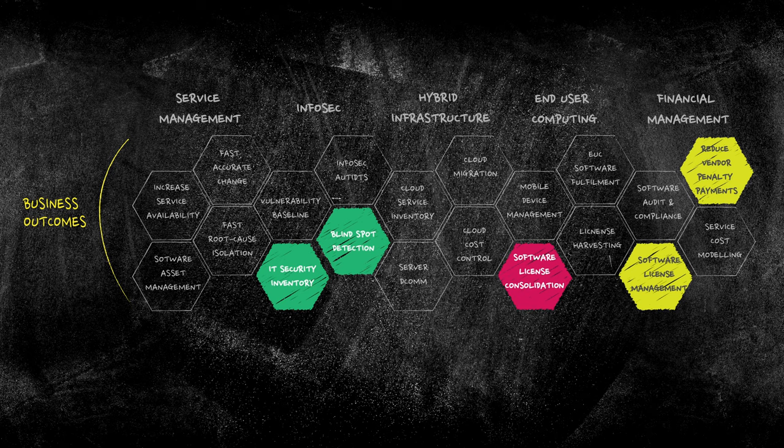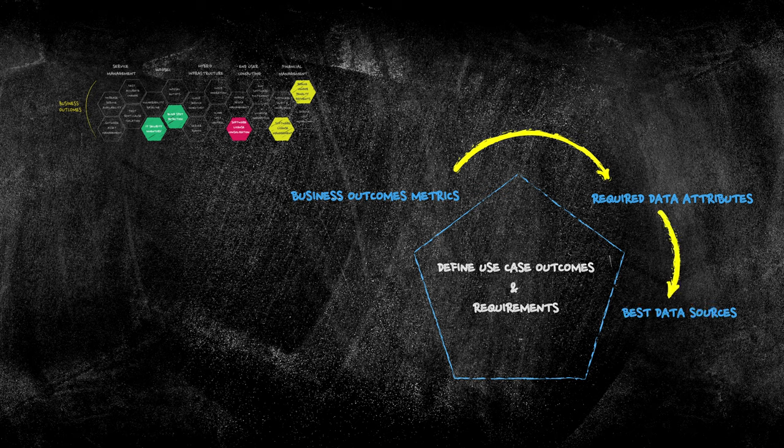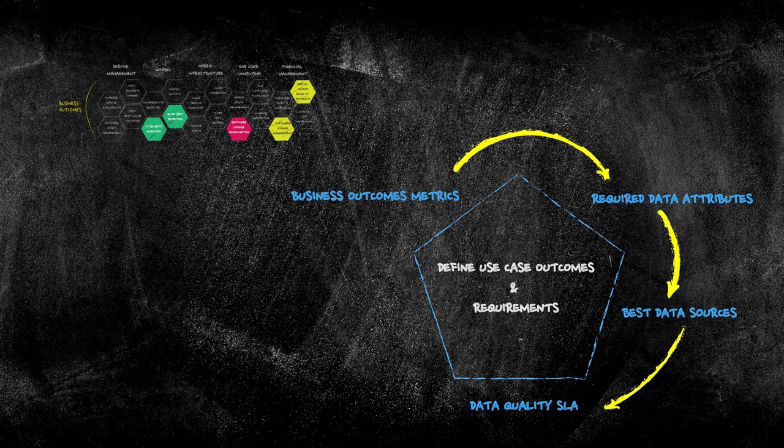Next, work out what is required to deliver these outcomes. The scoping will flesh out things like outcomes metrics, data attributes, what are the best data sources for this particular use case, acceptable data quality SLAs for this use case, identify asset management gaps for this use case.